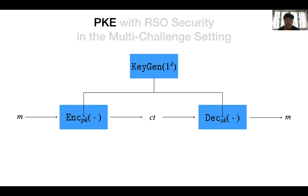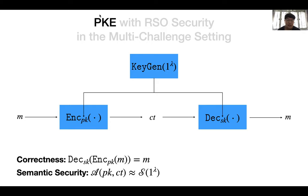We are all very familiar with the notion of public key encryption. Generally, it consists of three algorithms: namely the key generation algorithm which produces a public key and secret key pair, the encryption algorithm which encrypts a message to get a ciphertext, and the decryption algorithm which decrypts the ciphertext to get a message. Its correctness requires that the decryption algorithm can always recover the encrypted message from an honestly generated ciphertext, and its security requires that no one could learn anything from the ciphertext. This can be defined by requiring that the output of an adversary who can see the public key and ciphertext can be simulated by a simulator that takes nothing as input.